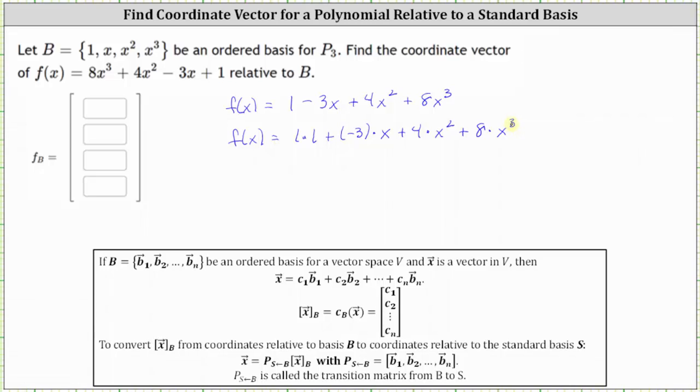And since the ordered basis is 1, x, x², and x³, we now know the coordinate vector relative to B is the vector [1, -3, 4, 8].